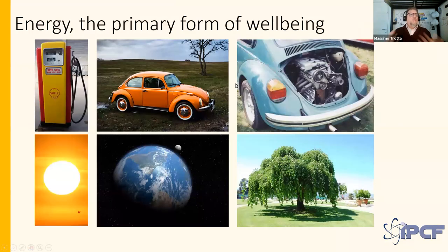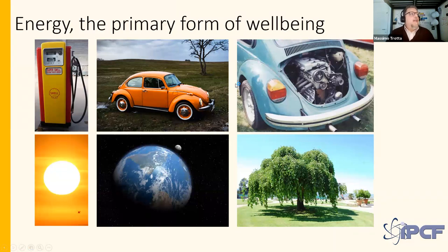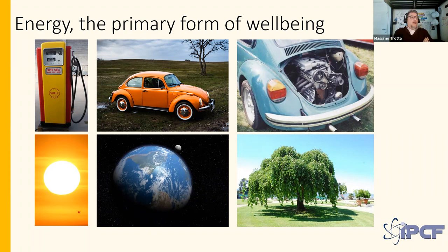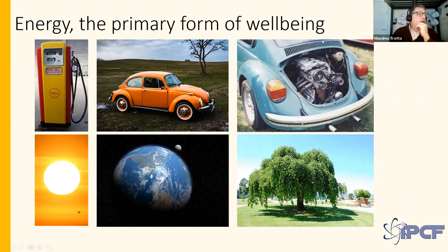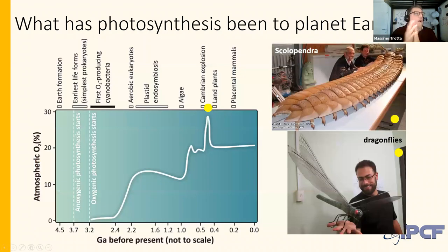The mighty power of photosynthesis — exactly like any well-being is based on the use of energy resources, Earth is also based on energy resources. The energy is the sun, the car is the planet, and of course the engine is plants — the photosynthetic organisms. Photosynthesis has shaped life and the structure of our planet.